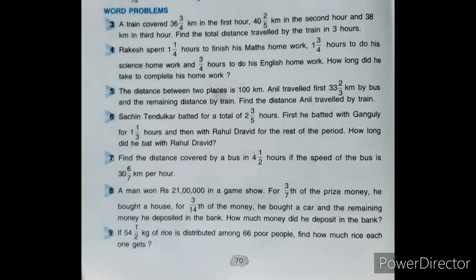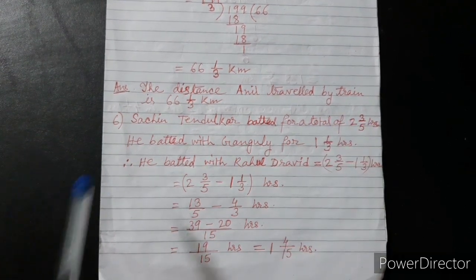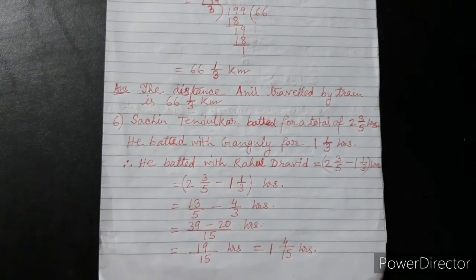Now sum number 6: Sachin Tendulkar batted for a total of 2 and 3/5 hours. First he batted with Ganguly for 1 and 1/3 hours and then with Rahul Dravid for the rest of the period. How long did he bat with Rahul Dravid? So, Sachin batted for a total of 2 and 3/5 hours. He batted with Ganguly for 1 and 1/3 hours. Therefore he batted with Rahul Dravid equal to this minus this.